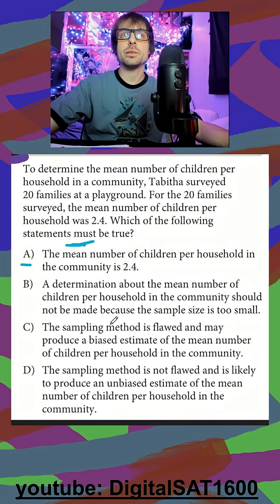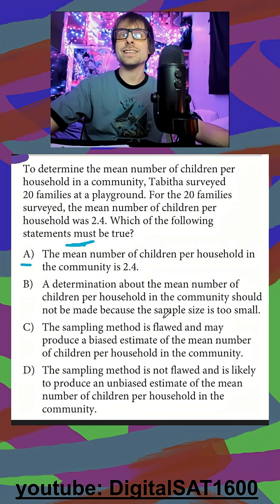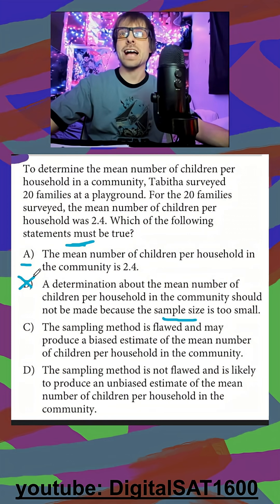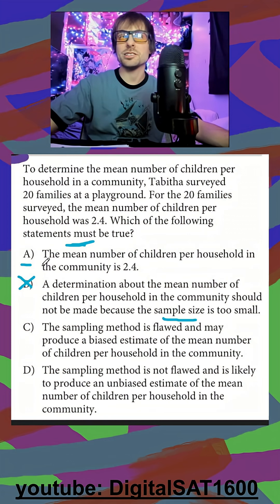In B, a determination about the mean number of children per household should not be made because the sample size is too small. We're not expected to actually calculate whether the sample size is appropriate or not.